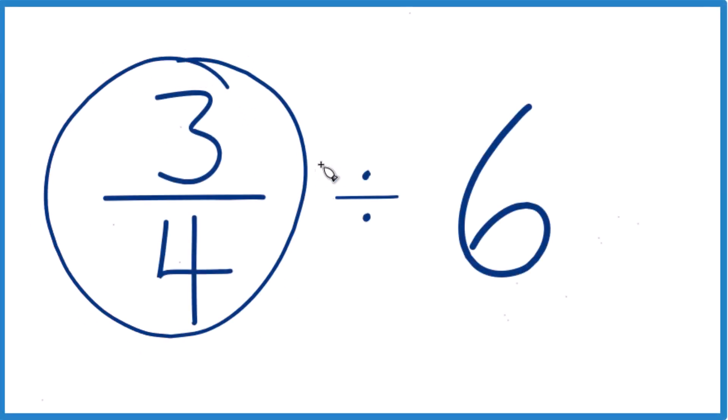Let's take 3 fourths divided by 6. Here's how you do it. So first off, 3 fourths, that's a number that's less than 1. It's 0.75.